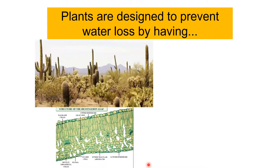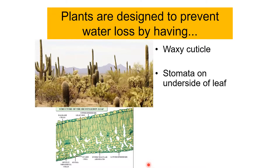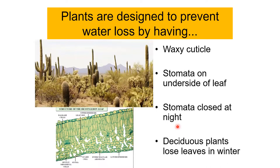Generally, plants are designed to prevent water loss. They have a waxy cuticle, stomata on the underside of the leaf — so less water evaporates — and stomata remain closed at night. Deciduous plants lose leaves in winter, meaning no stomata and less water loss. These are all adaptations to prevent water loss.